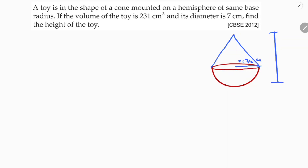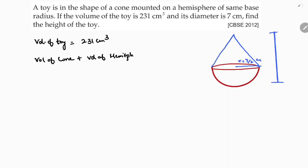The volume is given. Volume of toy equals 231 centimeter cube. Since we have a cone and a hemisphere, the volume of the toy is nothing but volume of cone plus volume of hemisphere, which equals 231 centimeter cube.